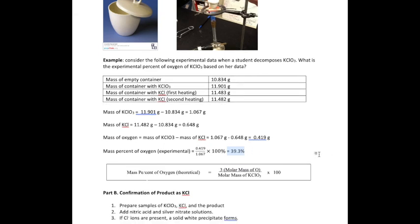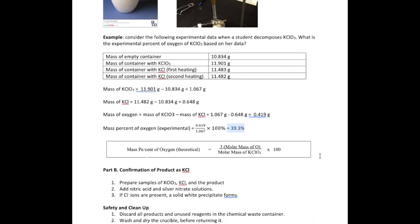In your actual experiment, you'll also calculate the theoretical mass percent of oxygen using molar masses from the periodic table. Then you'll compare your experimental mass percent with the theoretical value and figure out the percent error.